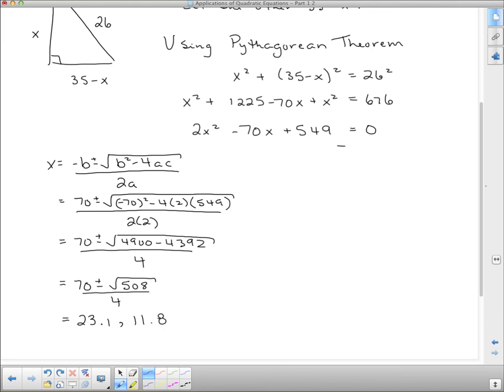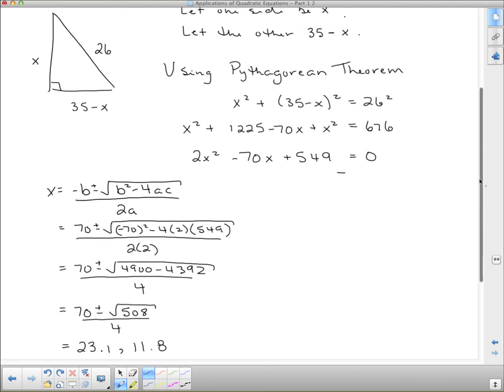Ta-da! So, once again, we have two answers here. And we have to decide which one's inadmissible. This time, since we're finding dimensions of a right triangle, both of these things are okay, because they're both positive. Now, this doesn't mean that all negative answers are inadmissible. But, in the case of dimensions, all negative answers are inadmissible.